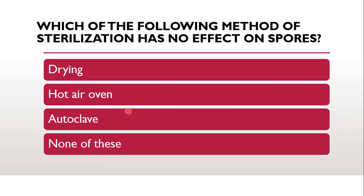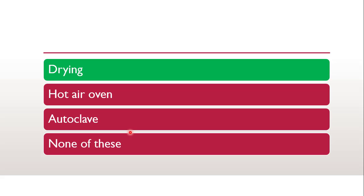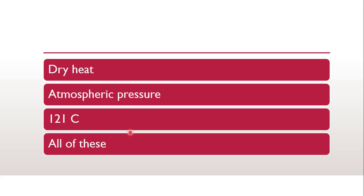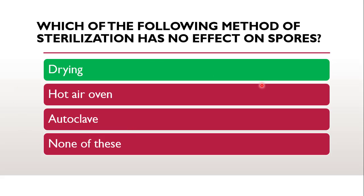The next question from part 1 is: which of the following methods of sterilization has no effect on spores — whether it is drying, hot air oven, autoclave, or none of these? The process which has no effect on spores is drying. According to the characteristics of spores, they are very dormant forms — they can resist drying and survive in harsh conditions. So the simple process of drying will not have any effect on spores.